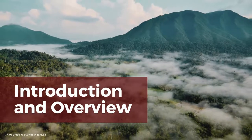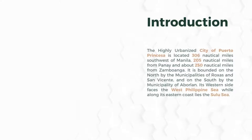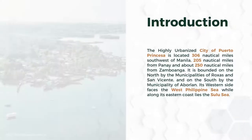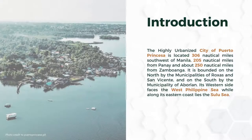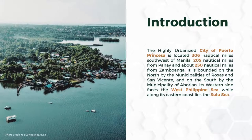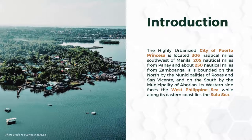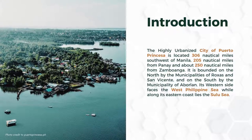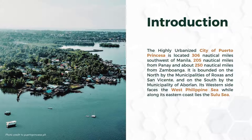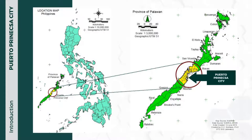Let me introduce you to the city of Puerto Princesa. Highly urbanized Puerto Princesa is located 306 nautical miles southwest of Manila, 105 nautical miles from Panay, and about 250 nautical miles from Zamboanga. It is bounded on the north by the municipalities of Rojas and San Resendor, and in the south by the municipality of Aborlan. Its western side faces the West Philippine Sea, while along its eastern coast lies the Sulu Sea.